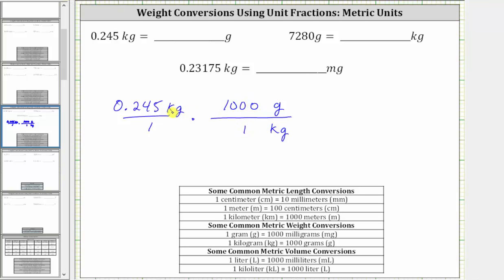Because we have kilograms divided by kilograms, the units of kilograms simplify out, leaving us with grams. Notice now the units are in grams, so now we multiply. The denominator is one, and therefore the product is just 0.245 times 1,000, which is 245, and now the units are grams. So 0.245 kilograms equals 245 grams.